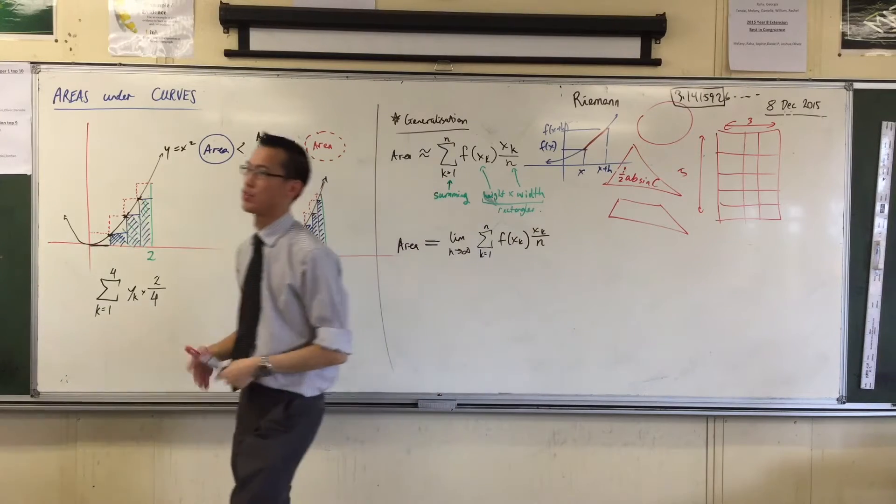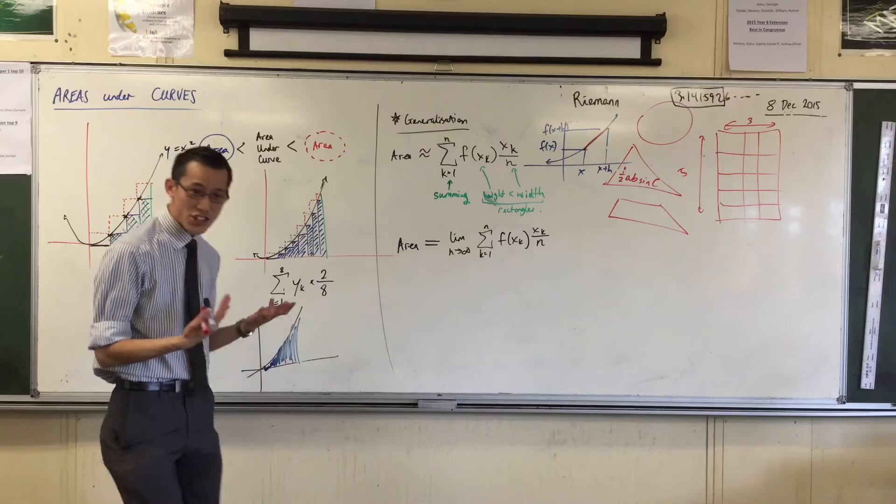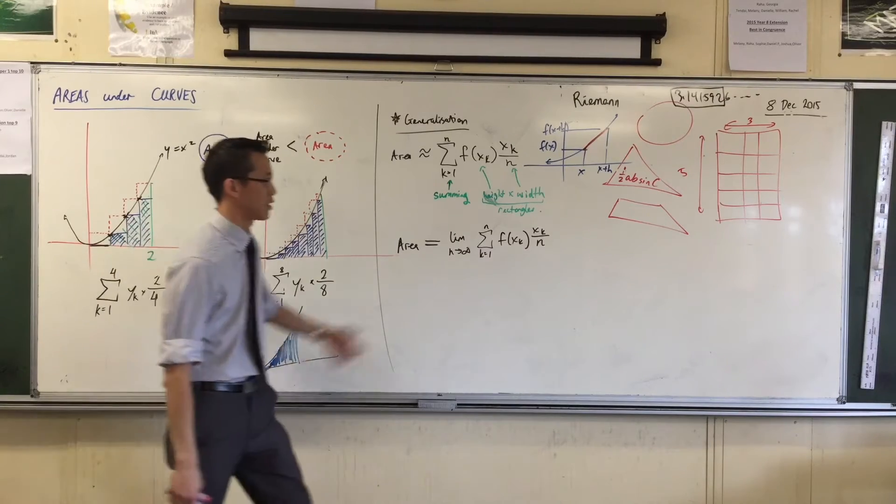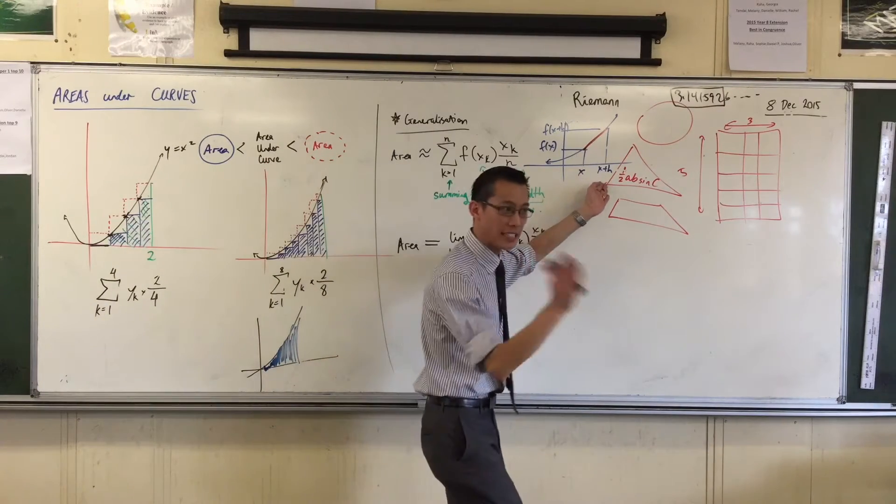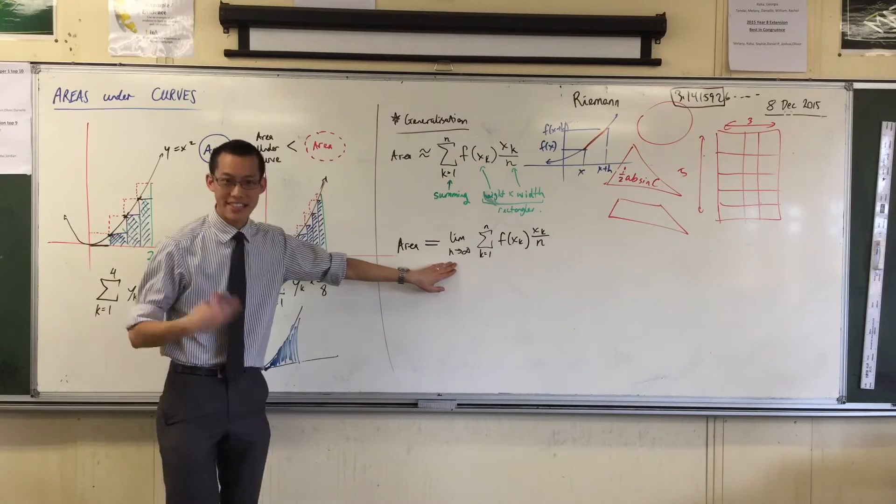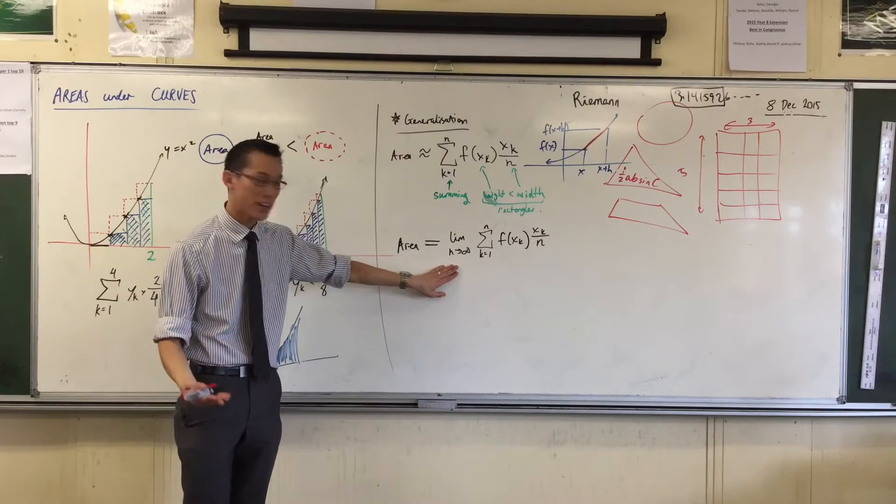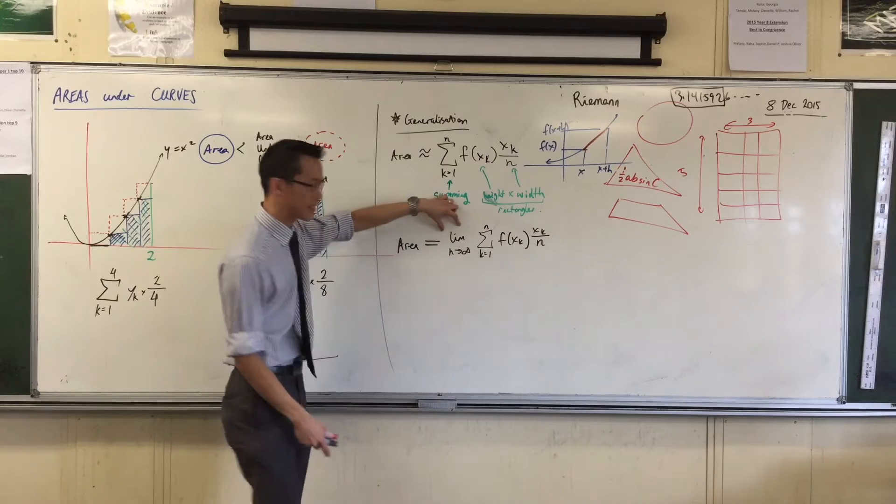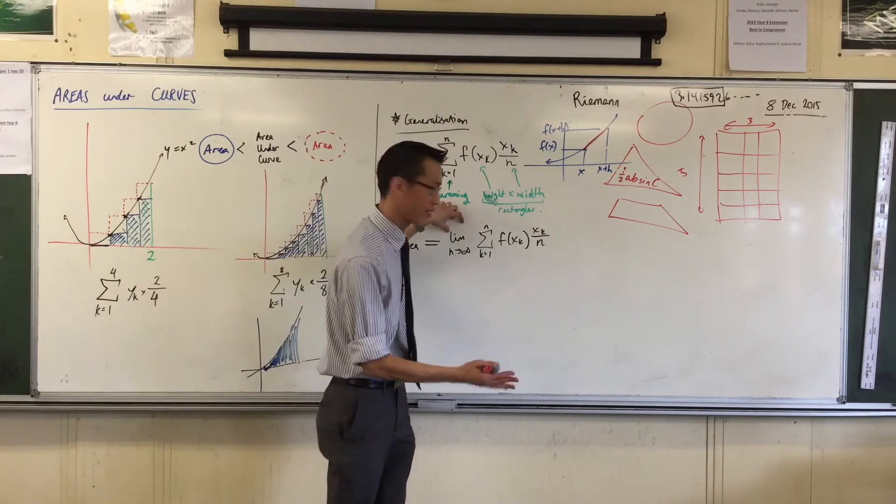We take the limit as h approaches zero, but if h is actually zero, I'm kind of in trouble, because I'm going to be dividing by zero. It never actually is zero, in the same way that this is never actually infinity, but I'm taking the limit. That's what this language allows us to do, to consider what if.